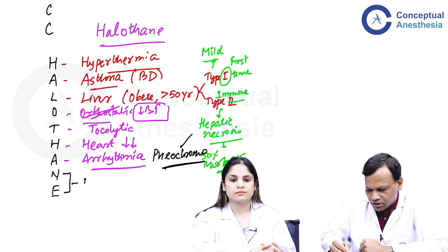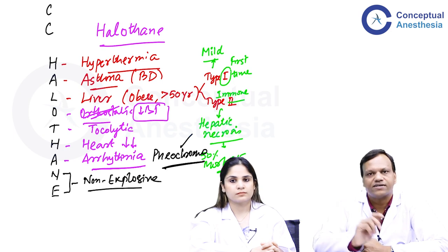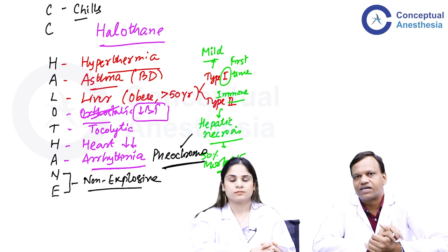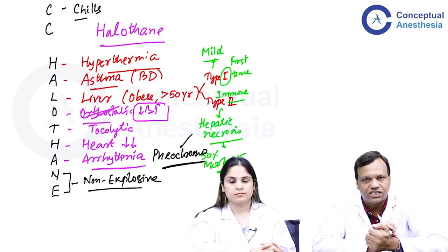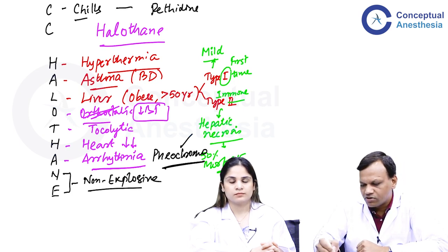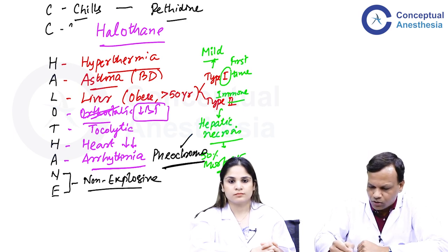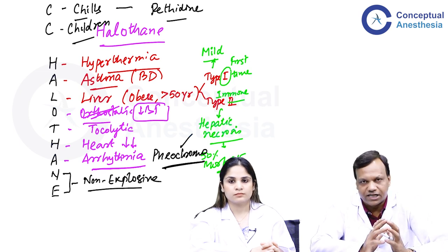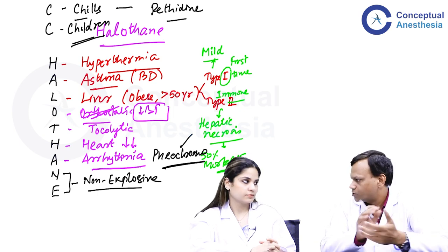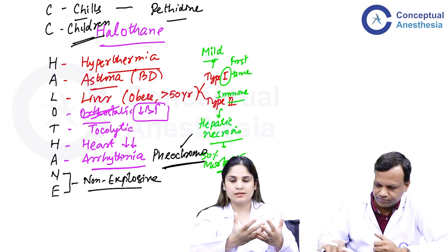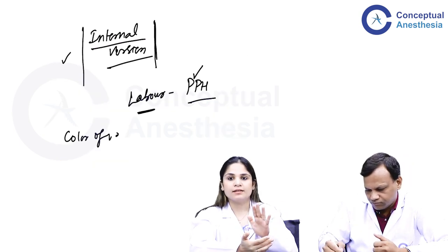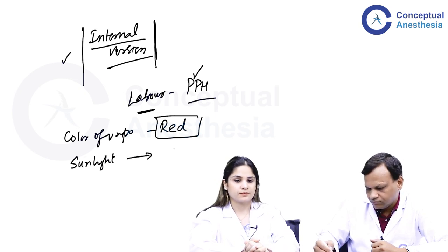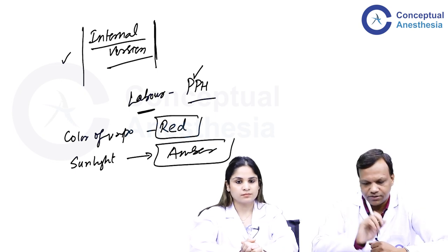Halothane is non-explosive, like all modern agents. C for chills: post-anesthetic shivering is very common after halothane anesthesia; it is treated with pethidine. The final C stands for children: halothane is suitable for children because it is a bronchodilator, does not irritate the respiratory pathway, and provides smooth induction. The vaporizer of halothane is red in color. Halothane is stored in amber-colored bottles because it gets denatured when exposed to sunlight.